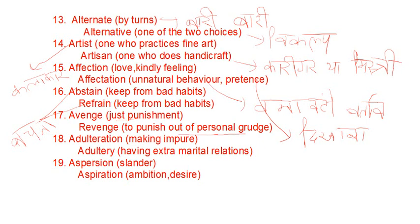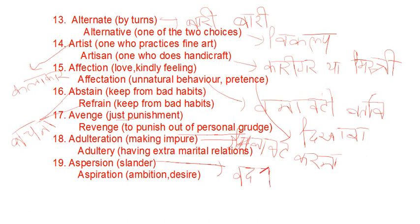Adulteration means making something impure. Adultery means having an extra-marital affair. Aspersion means slander. Aspiration means ambition or desire.